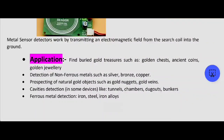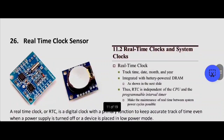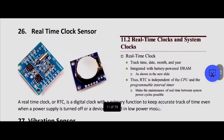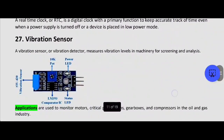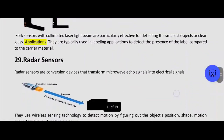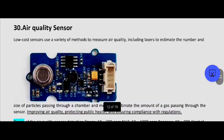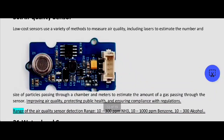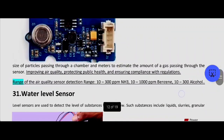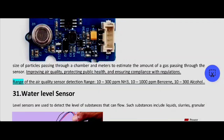Next ones are the real-time clock sensor, vibration sensor, fork sensor, and radar sensor. Next is the air quality sensor. The air quality sensor detects the presence and mixing of elements, improving air quality, protecting public health, and ensuring compliance with regulations. The detection range is 10 to 300 ppm for NH3 and methane, and 10 to 1000 ppm for benzene.